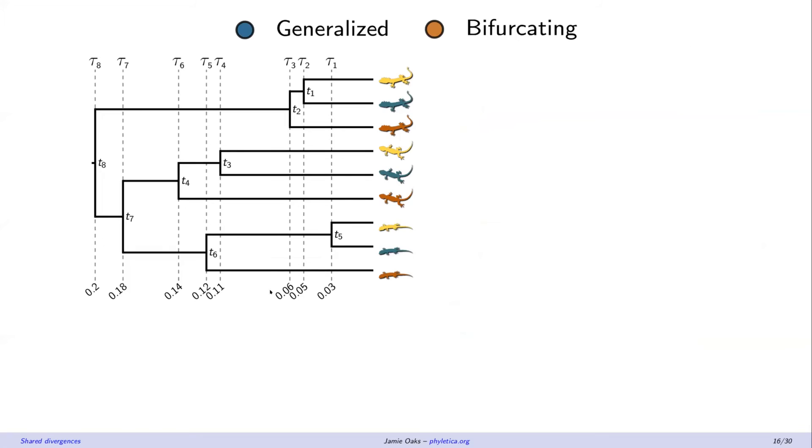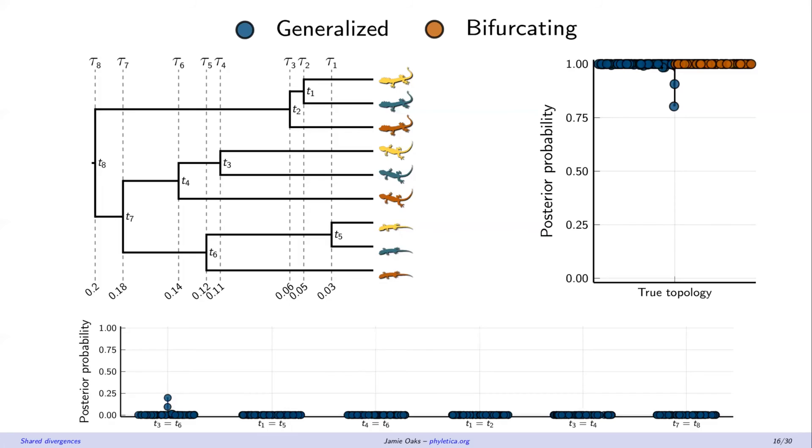Okay, so now let's look at some results when we are simulating data on this tree, the independent bifurcating tree. Well, both methods do great. So this is actually the posterior probability of the whole topology. We're essentially always fully confident in the right answer with both approaches. And this is just showing possible ways that the new method could be fooled by lumping some of these times together. But it's not being fooled. It's showing no support for those incorrect arrangements. So that looks good.